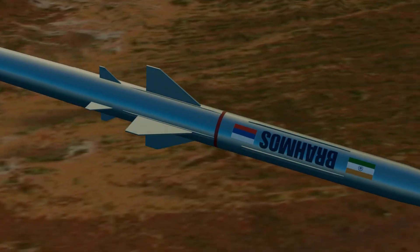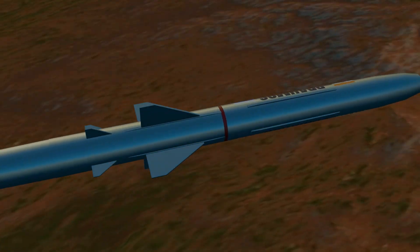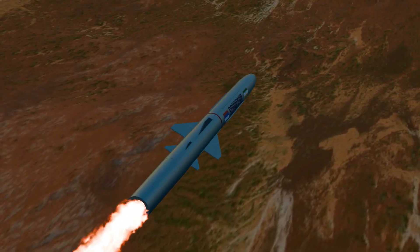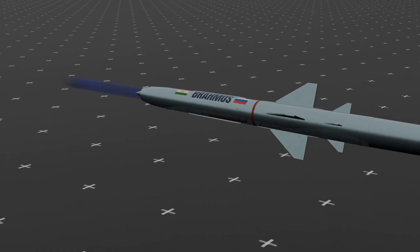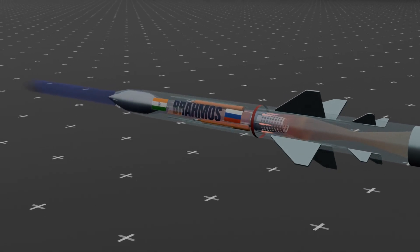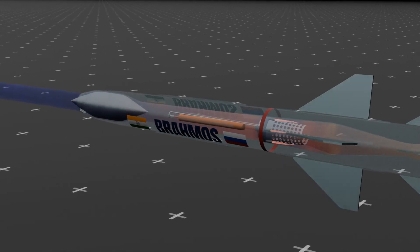BrahMos is the world's fastest supersonic cruise missile, and according to current technological standards, intercepting it is nearly impossible. This missile utilizes a ramjet engine, allowing it to reach speeds of up to Mach 3.